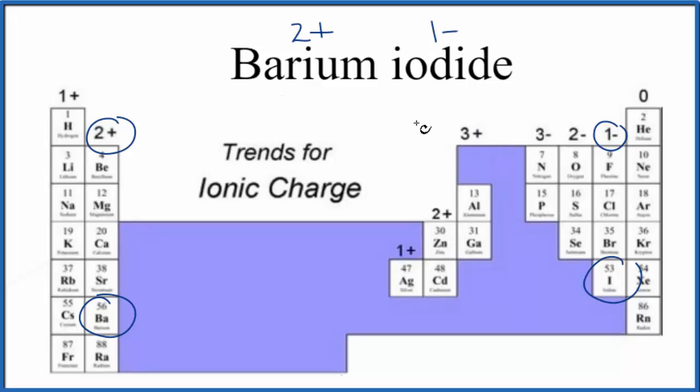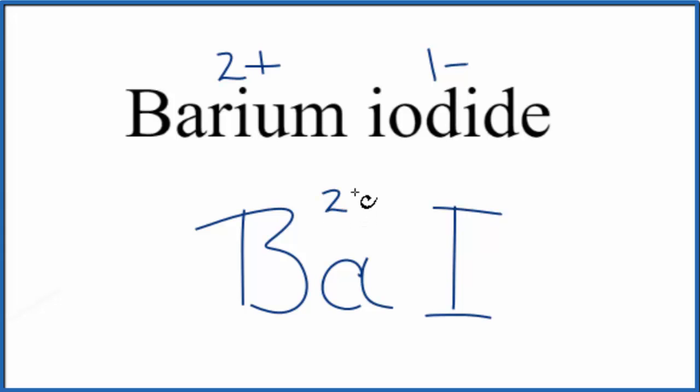So now that we know the charges, we can finish the formula for barium iodide. So barium, we said, is 2 plus, and the iodide ion, that's 1 minus. So you can see we're going to need two iodine atoms to get a charge of 2 minus to balance out the 2 plus.